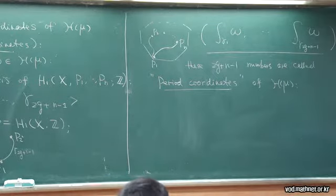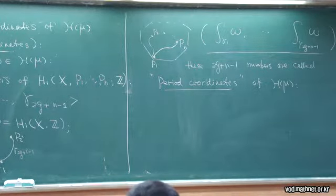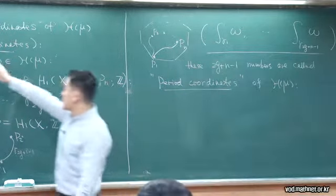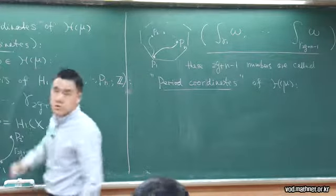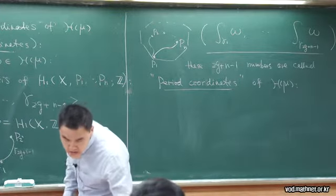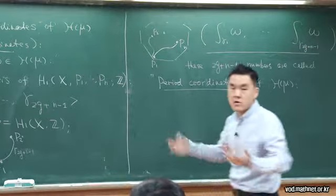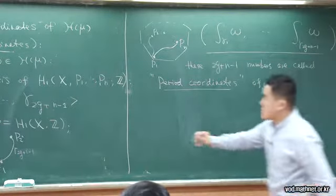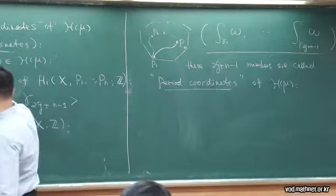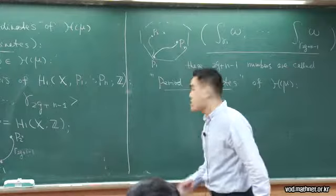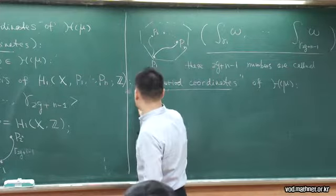Let me explain why it makes sense to think of these numbers as local coordinates of H_μ. This integration of omega along γ gives you local coordinates of H_μ — I already remarked this only gives a local description. Maybe the best way to think about it is using the flat polygon presentation. We have an identification or correspondence between a one-form and a translation surface.